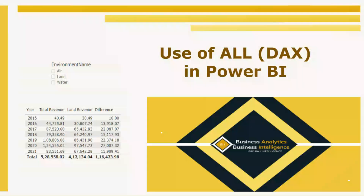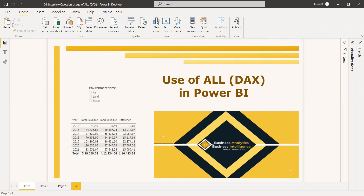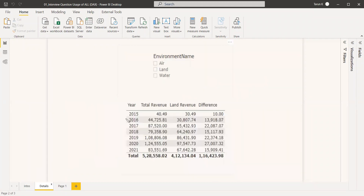Welcome to this new video on usage of the ALL function in DAX. The ALL function in DAX returns all the rows in a table or all the values in a column, ignoring any filters that might have been applied. This function is useful for clearing filters and performing calculations across all rows in a table.